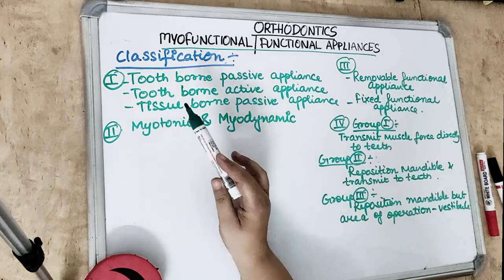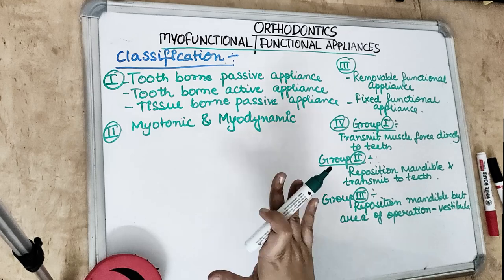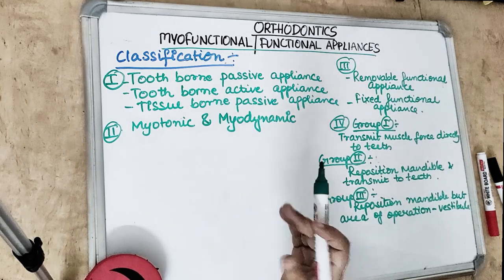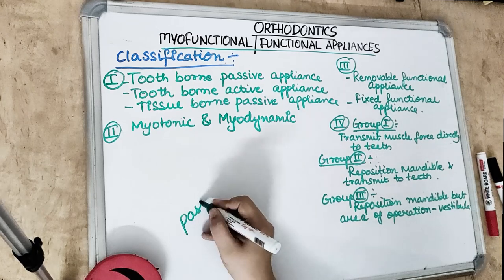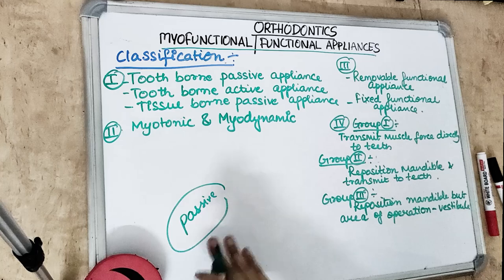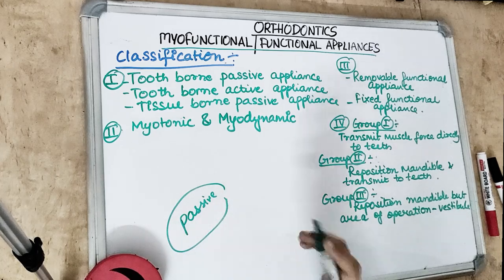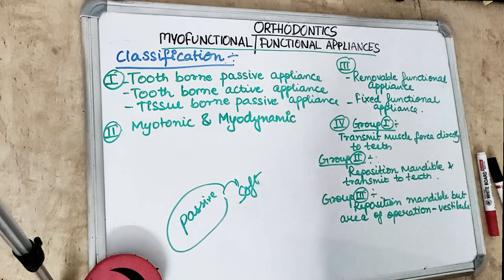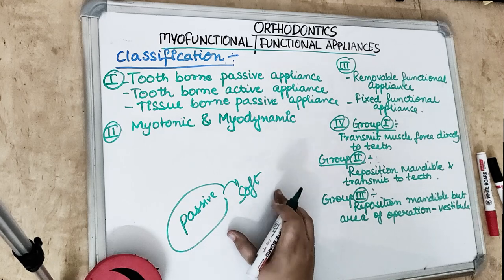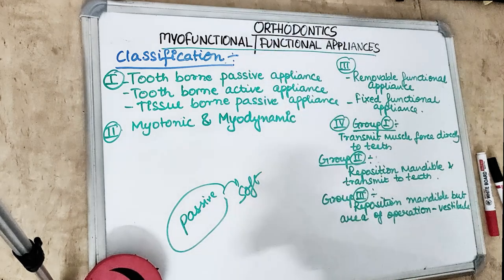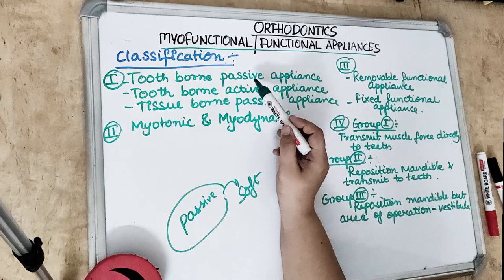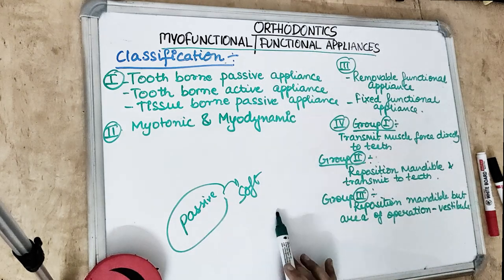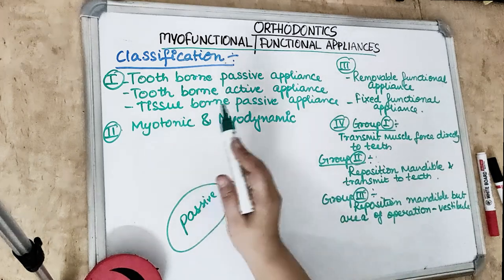The first classification is the tooth-bone passive appliance. As the name suggests, 'passive' means there is no active component — no springs, no screws. These appliances depend on the soft tissue stretch and the muscle activity to produce the desired result. They have no intrinsically generated force component; only the soft tissue stretch and muscle activity do all the work.